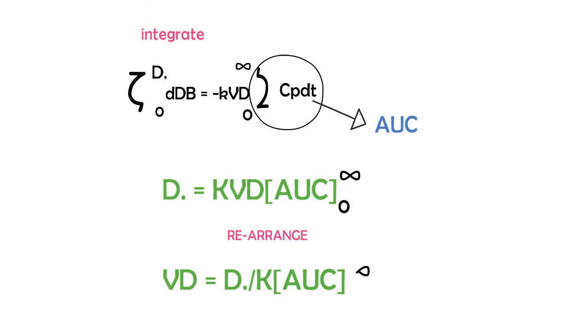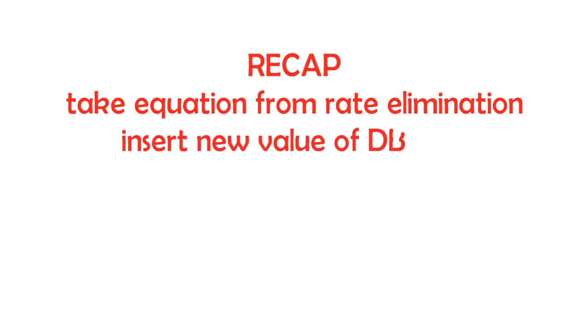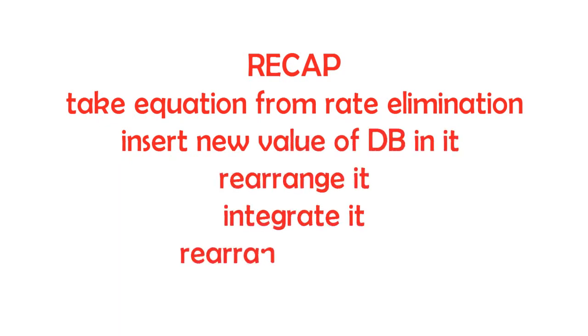Like just keep it simple, just don't make it so complicated for yourself. We just got one equation what we had before in the elimination rate constant. We put the new dB values that we had in it, it's Vd Cp. We just simply rearranged it, integrated it, and then we rearranged it again. Please don't get confused in this. It's actually simple. Just practice it out and do it and you'll get to it. I'm sure.